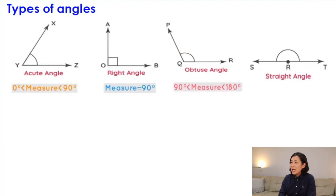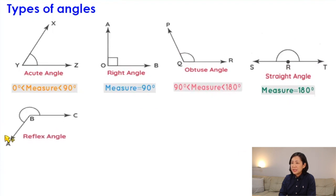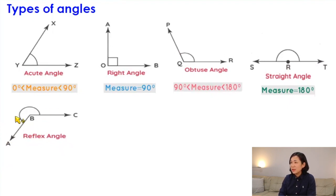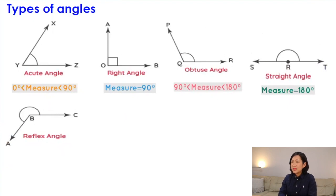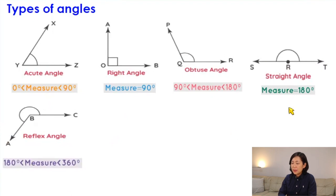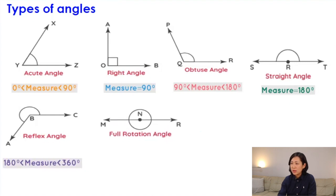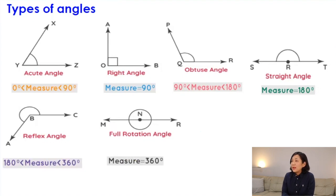The next angle is called the reflex angle. When a ray forms two angles, the smaller one can be acute, right, or obtuse, but on the other side we can have a bigger angle — that is the reflex angle. Reflex angles are always greater than 180 and less than 360 degrees. Finally, a full rotation angle is a full turn of 360 degrees, and we also call this a complete angle.